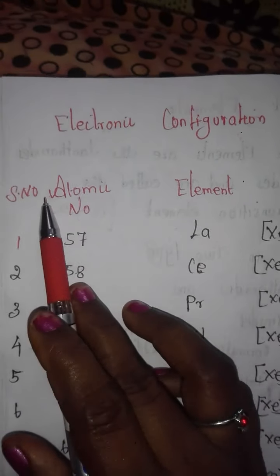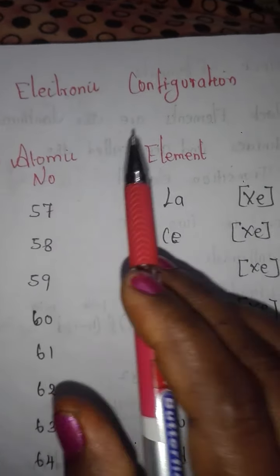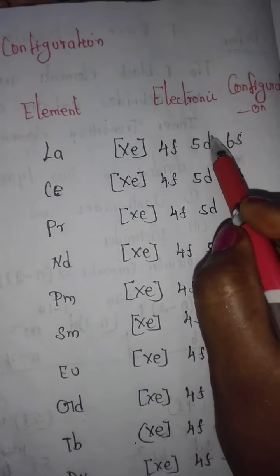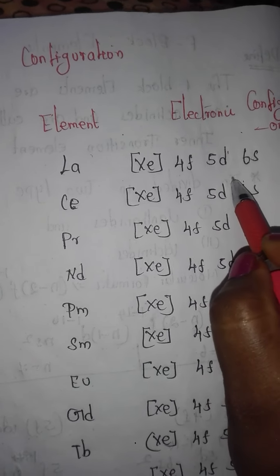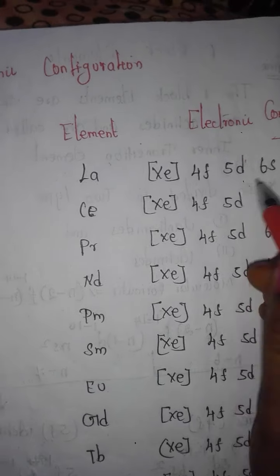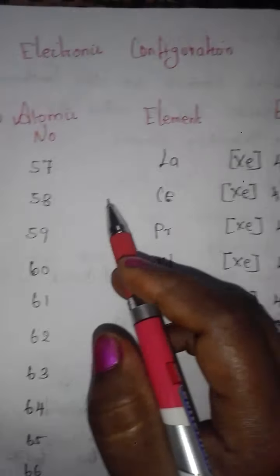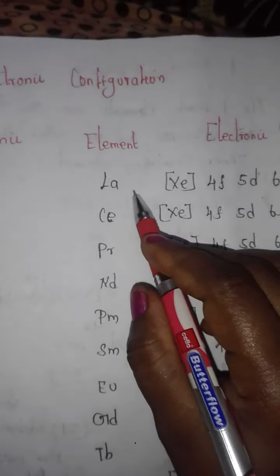The table covers: serial number, atomic number, element name, and electronic configuration. The electronic configuration is written starting from atomic number 57 for lanthanum, using the format involving 4F, 5D, and 6s orbitals.